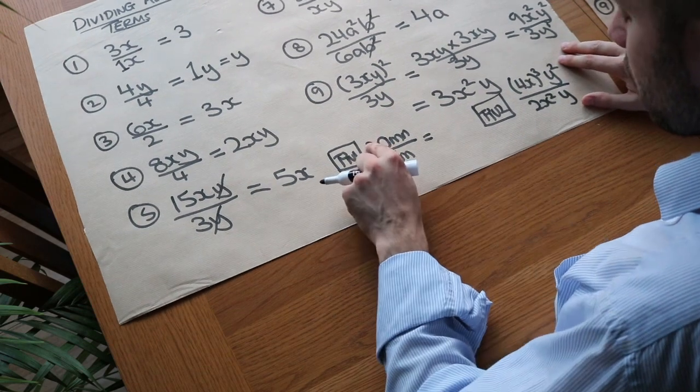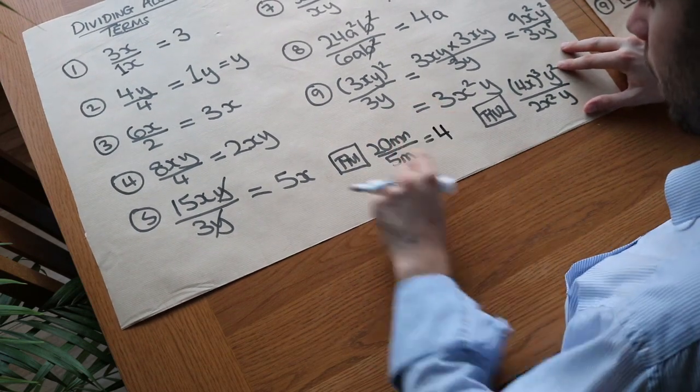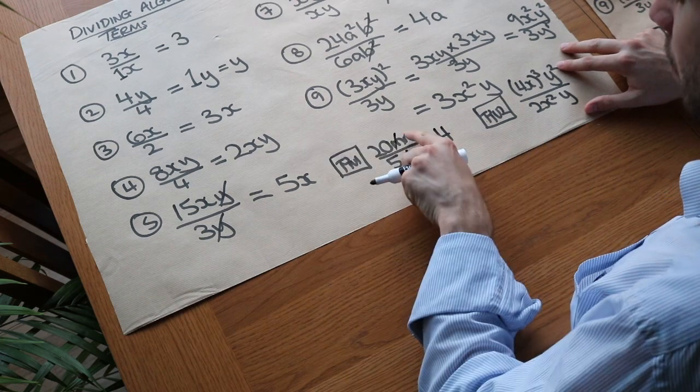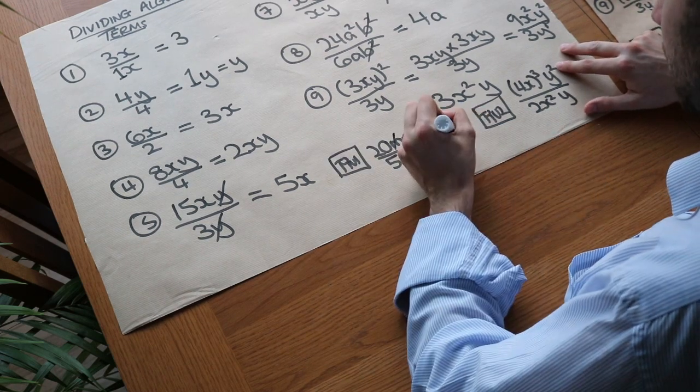Right, let's have a go at these. Well, we've got 20 divided by 5, which is 4. m divided by m, they cancel. And then we've got n, and we're not dividing by any n, so it's just 4n.